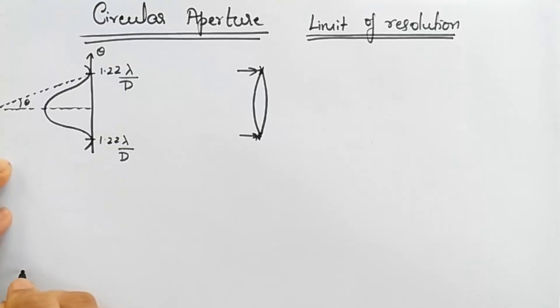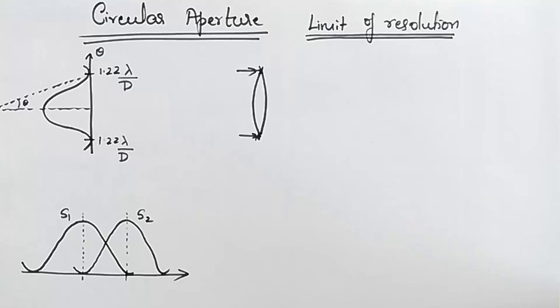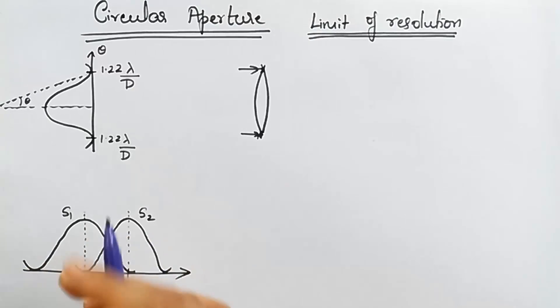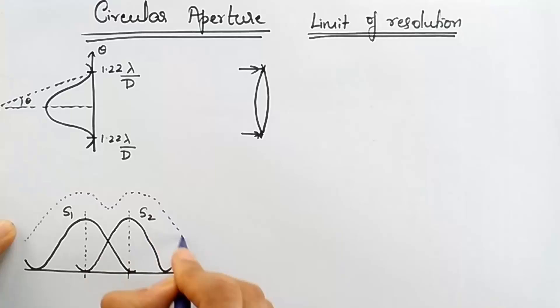Rayleigh says that if you have two sources whose diffraction patterns are so close to each other that the primary maxima of the first source exactly coincides with the first minima of the second one, so if this is what you're going to get, this is of the first source I'll call this as S1 and this is of the second source S2, then Lord Rayleigh says that when you're on the screen, this just appears to be two sources.